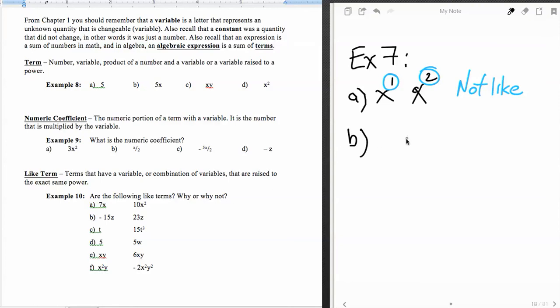Part B, we have negative 15Z and 23Z. The variable parts on both of them are exactly the same. So this one is like terms. And the thing that we don't want to confuse is the negative 15 with the numeric coefficient.